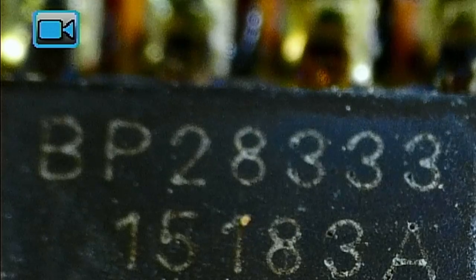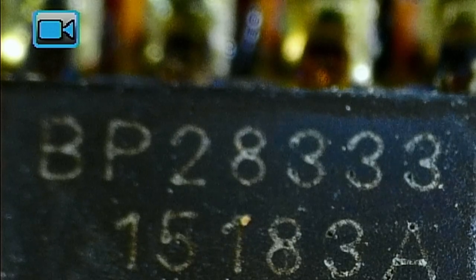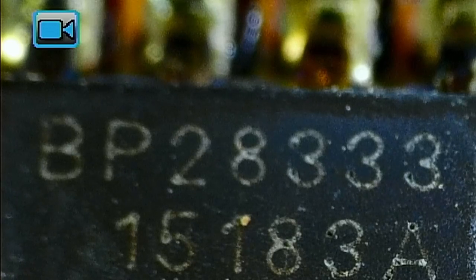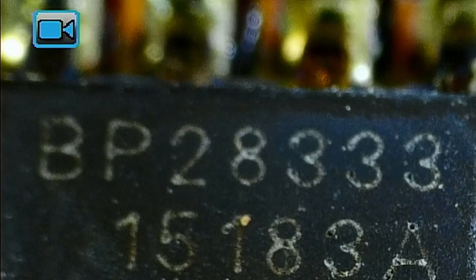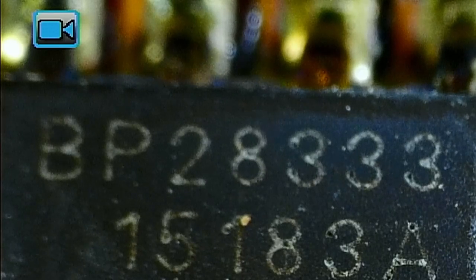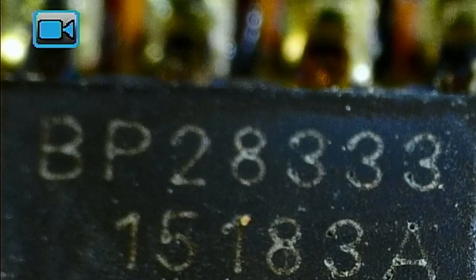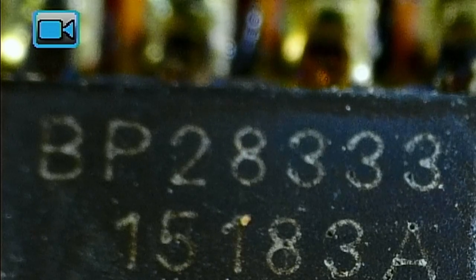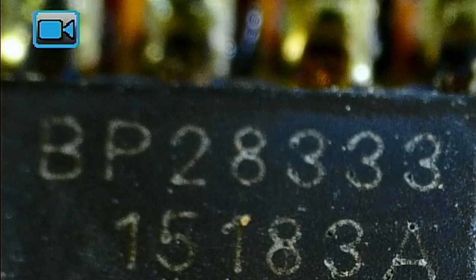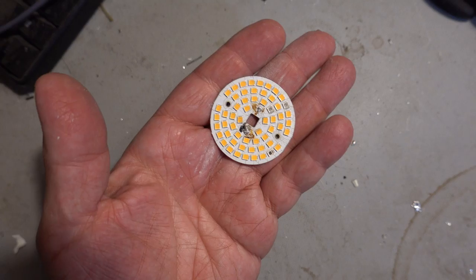Essentially it's a constant current power supply that's a buck regulator. So the voltage coming in is 120 volts and then it goes through a bridge rectifier, gets to about 140 to 170, and then it uses that to light a string of LEDs. It's relatively simple, relatively cheap, and that's why they're in these light bulbs.